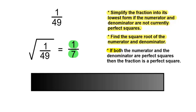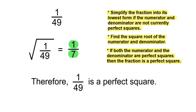If both the numerator and denominator are perfect squares, then the fraction is a perfect square. They are both perfect squares; therefore, 1 over 49 is a perfect square.